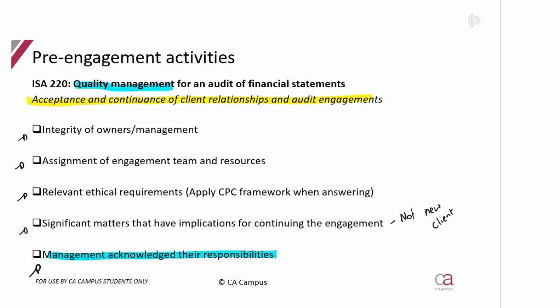In terms of integrity of the owners, the quality management system already covered what the firm's policy needs to address before acceptance and continuance. It covered determining who goes on the engagement, compliance with requirements, legislation, standards, and ethical requirements. This is now the partner actioning those policies to ensure the acceptance and continuance quality objectives are met.